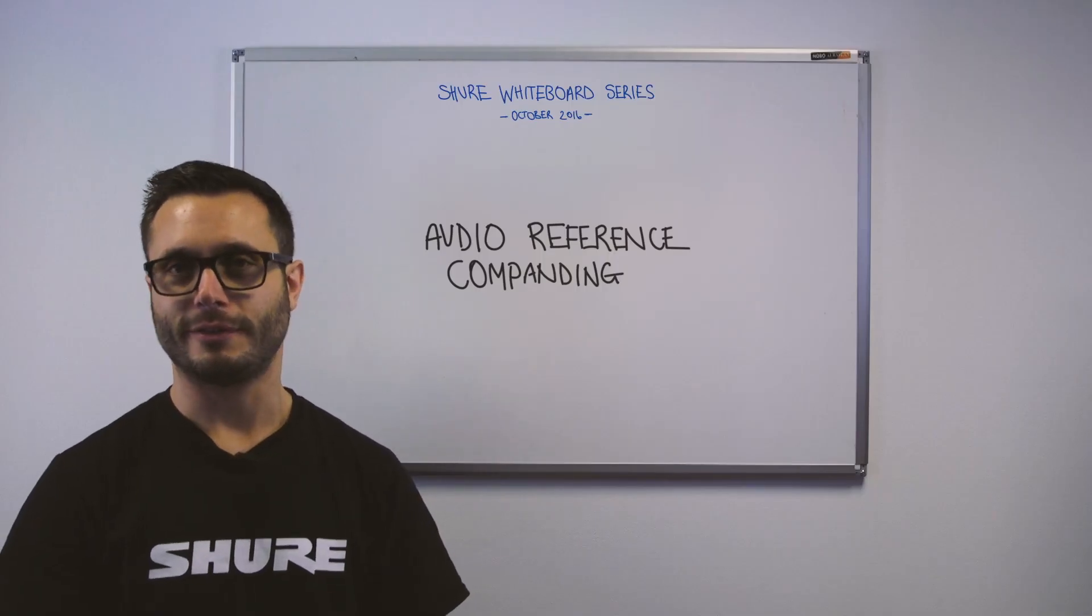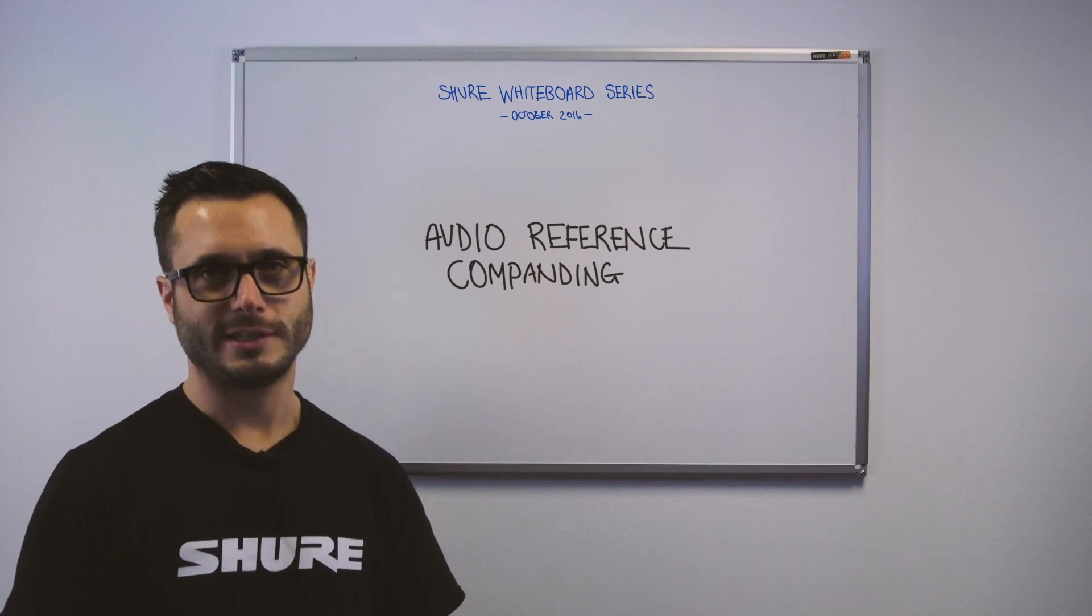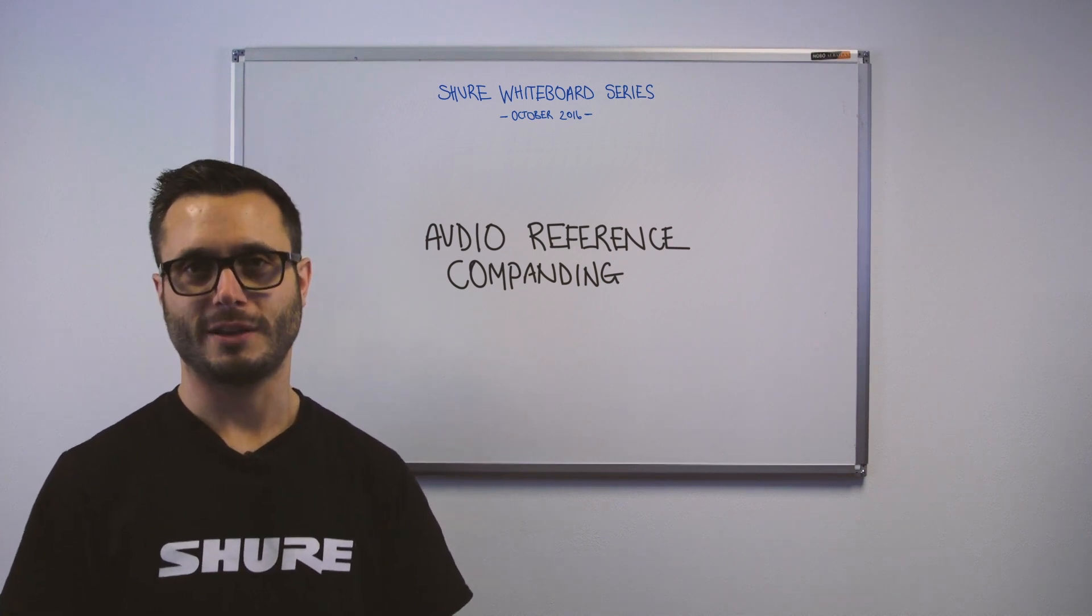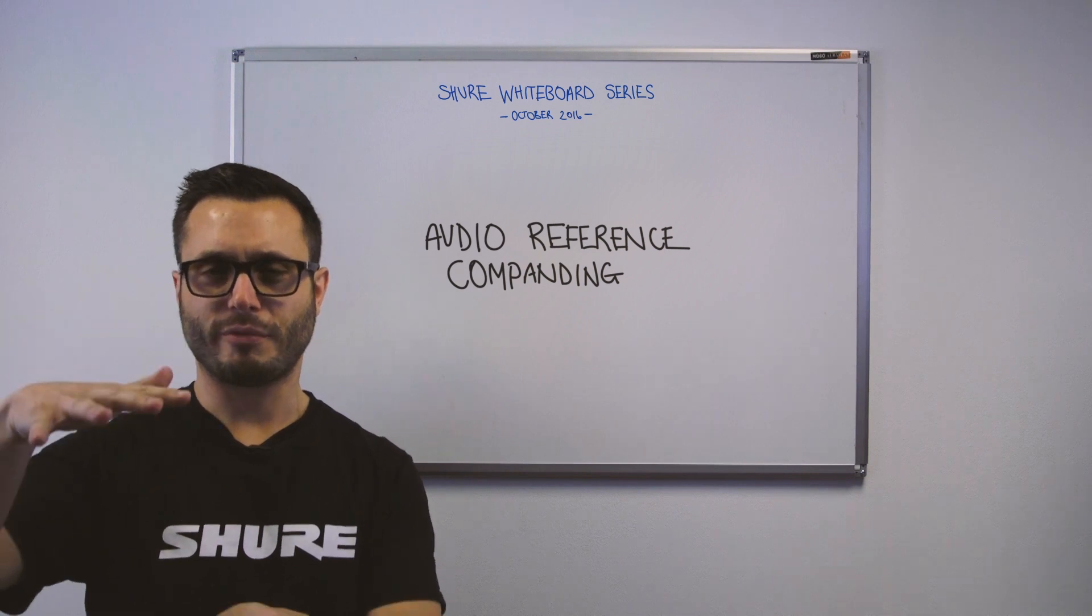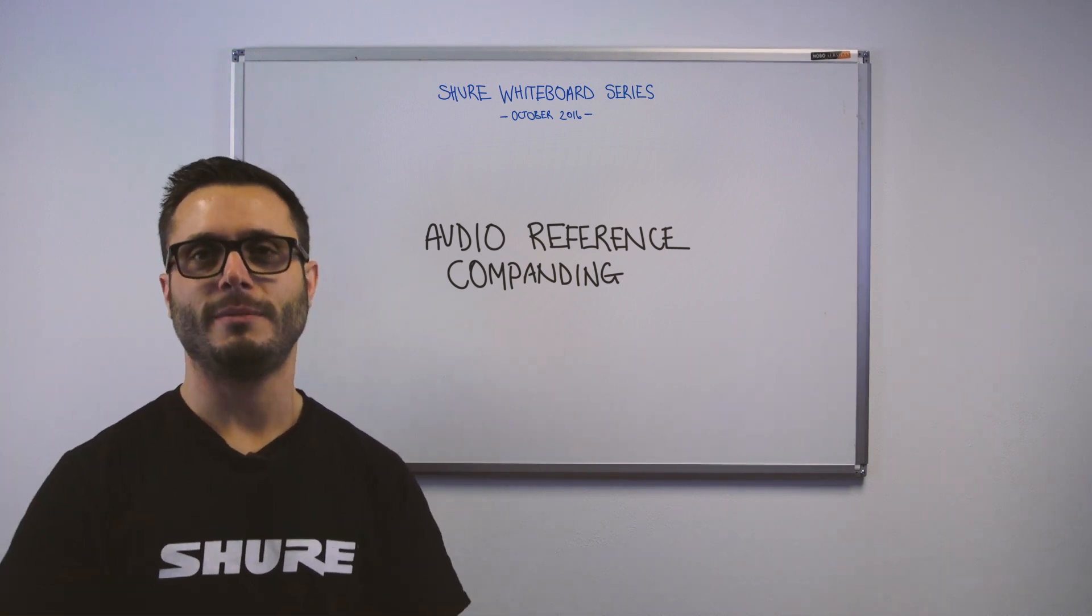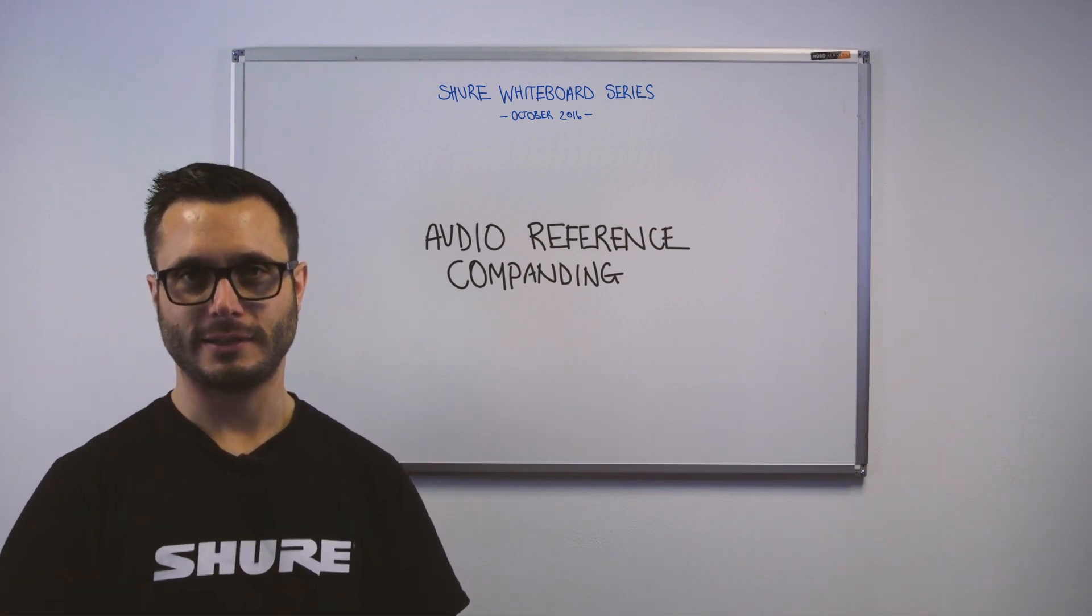In old analog systems, we used to use a fixed ratio. Modern systems would use something called audio reference companding. These systems only compress when they need to and ends up with a much more natural sounding system.